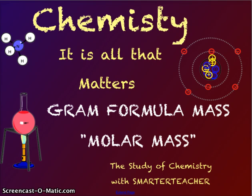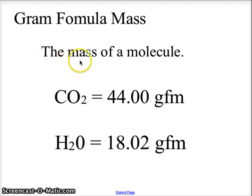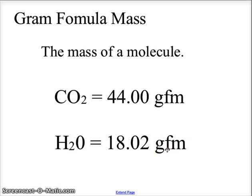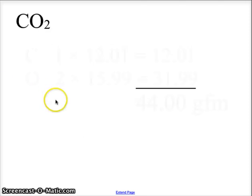Hello, welcome back to Chemistry — it is all that matters. Today we're going to look at gram formula mass, which can also be called molar mass, because the gram formula mass equals the molar mass of the element or molecule. Gram formula mass is the mass of a molecule. For CO2 (carbon dioxide) the gram formula mass is 44, and for water H2O it's 18.02. Gram formula mass is based on atomic mass units from the periodic table.